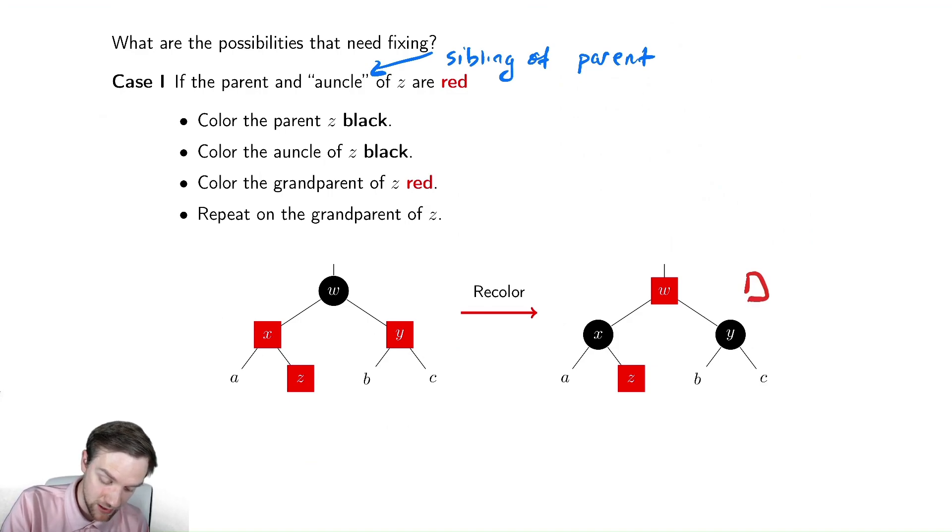And I could have the exact same problem again. So we're just going to repeat this on the grandparent of Z, which is W. And we'll repeat this until eventually we've no longer borked it too bad. So that's our idea for how we're going to do this.